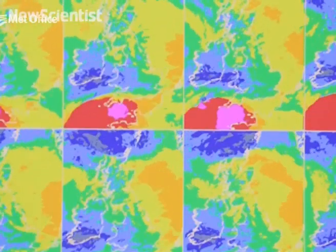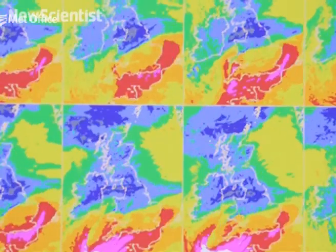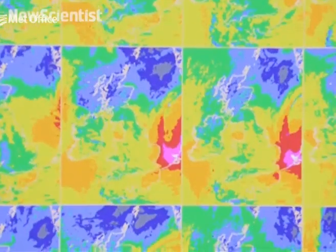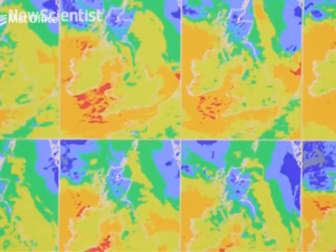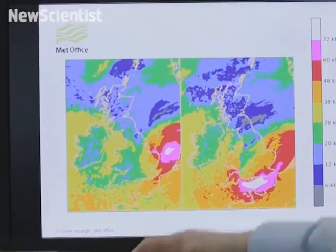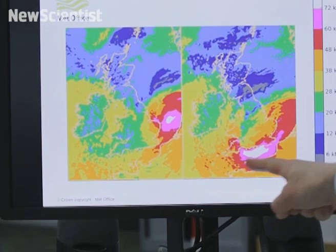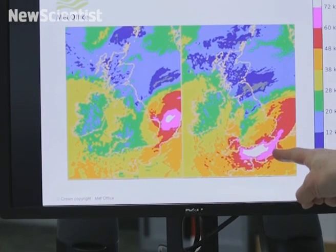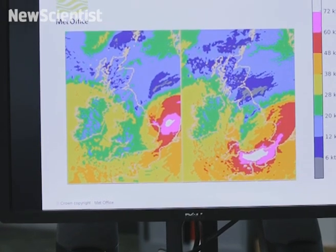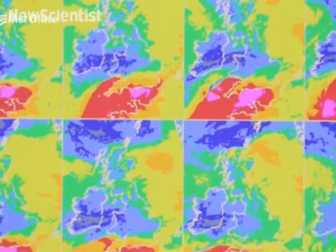Here we can see 12 separate forecasts for the winds from that same storm. And you can see immediately differences there. If we just highlight and zoom in on just a couple of those forecasts, you can see that the strongest winds are in quite different places and a different shape in these two forecasts, which is very important information to users who are interested in what damage that storm might cause.